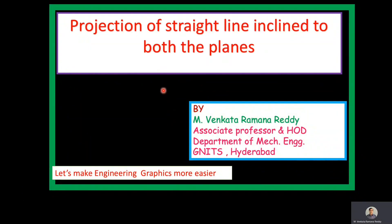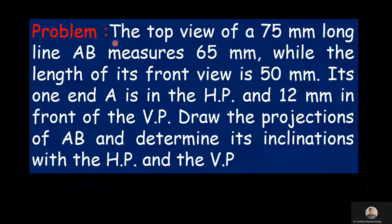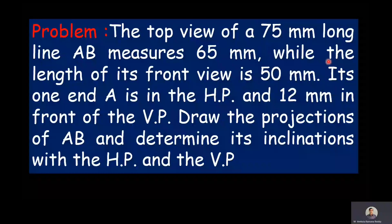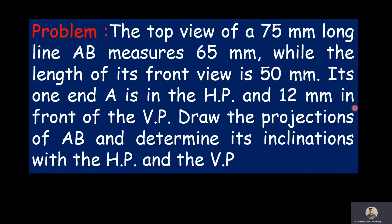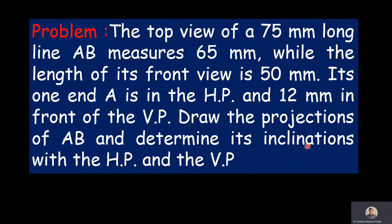Welcome to the discussion on problems on projection of straight line inclined to both the planes. The given problem is: the top view of a 75 mm long line AB measures 65 mm, while the length of its front view is 50 mm. Its one end A is in the HP and 12 mm in front of the VP. Draw the projections of AB and determine its inclinations with the HP and the VP.